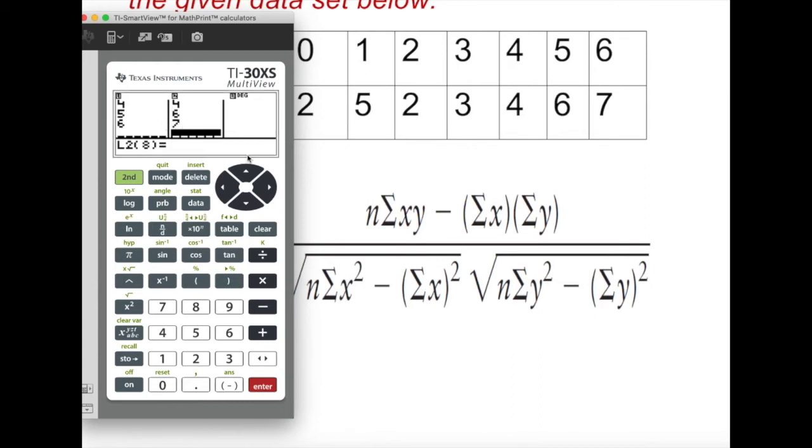Now we need to get the calculation, the correlation coefficient. This is very nice. All you do is second data. Now you have two variables, you have x and y.